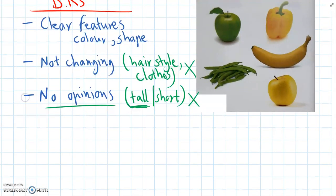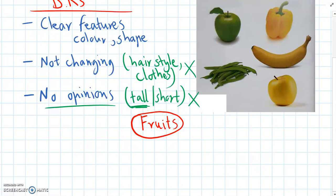Alright, so we'll start making our dichotomous key. And the first step we always do is start at the top by naming the whole group of objects that we're classifying. So in this case, we're classifying fruits.